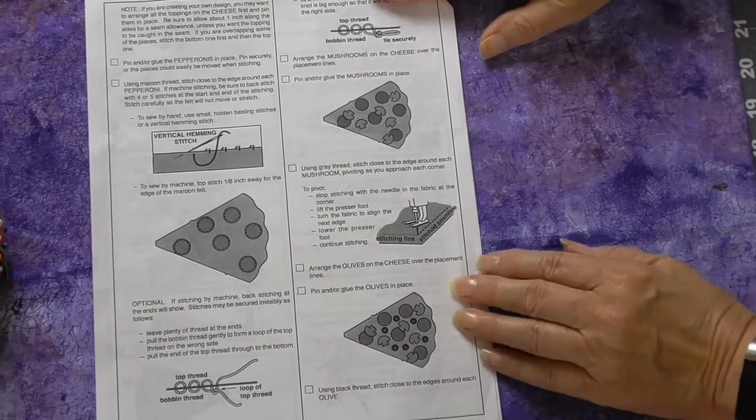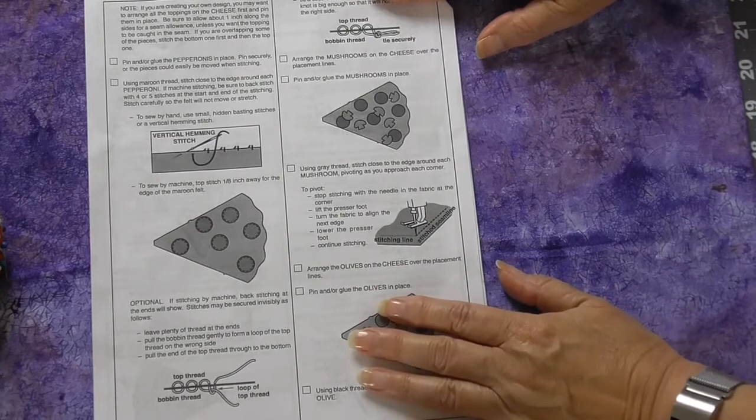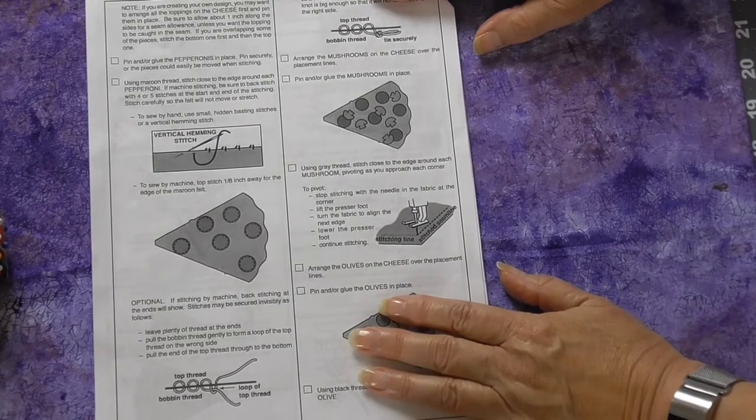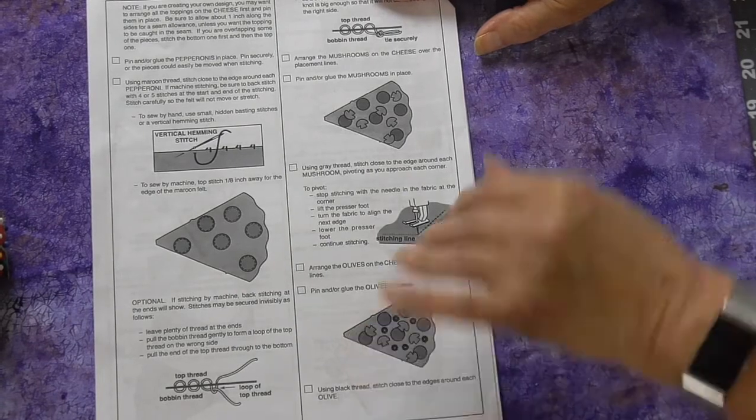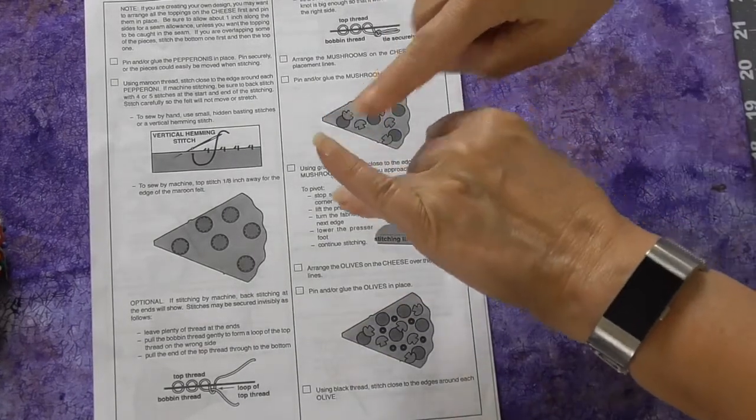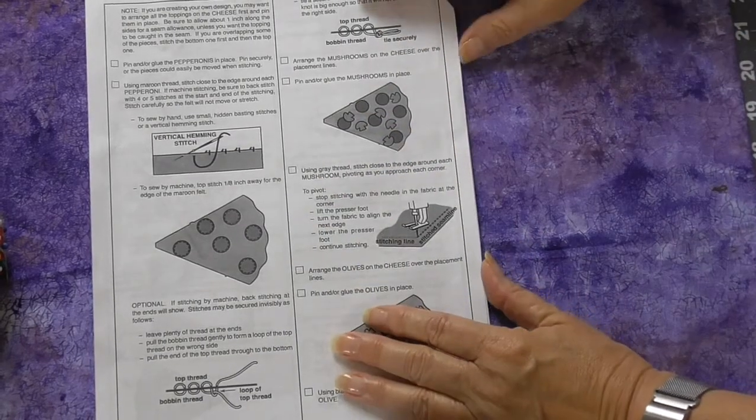Become familiar with how different measurements look. I'm going to be talking about an eighth of an inch and a fourth of an inch the most. You may need to measure these at first to get your eyes used to what you should be seeing. Sometimes people will use the size of their little finger to remind themselves how big or how far apart stitches should be.